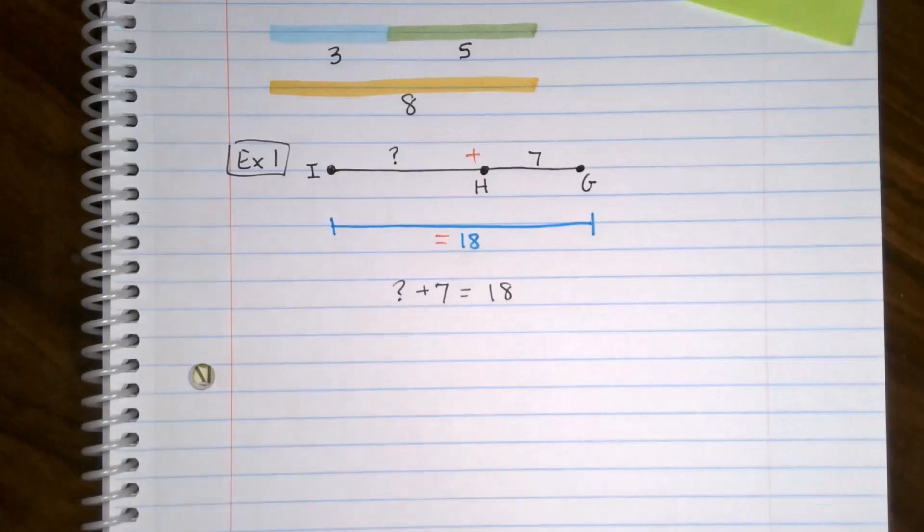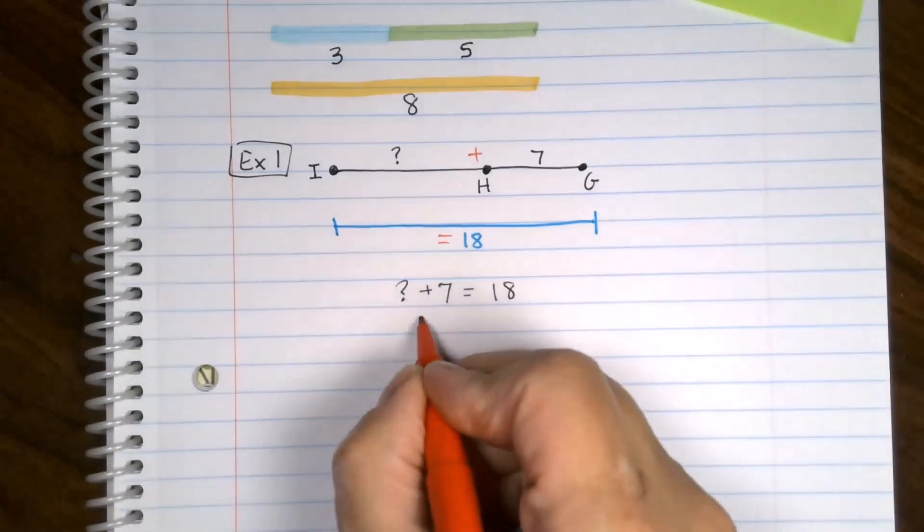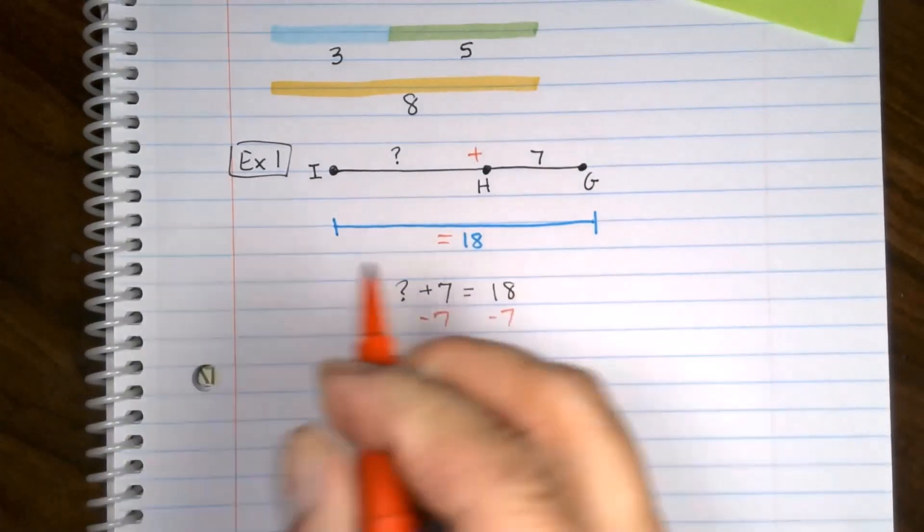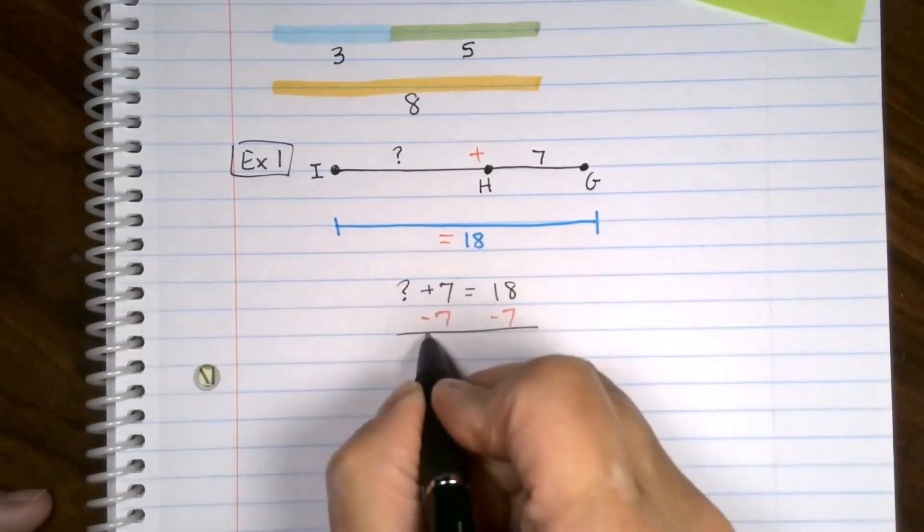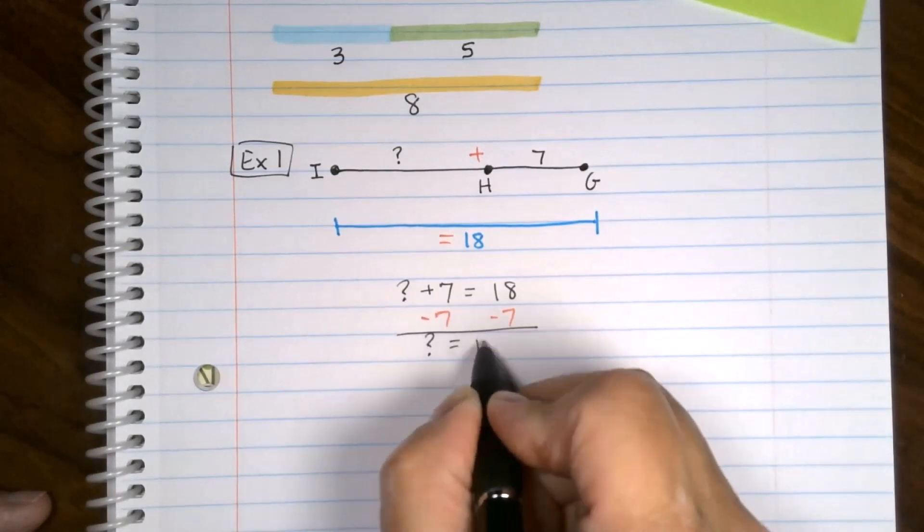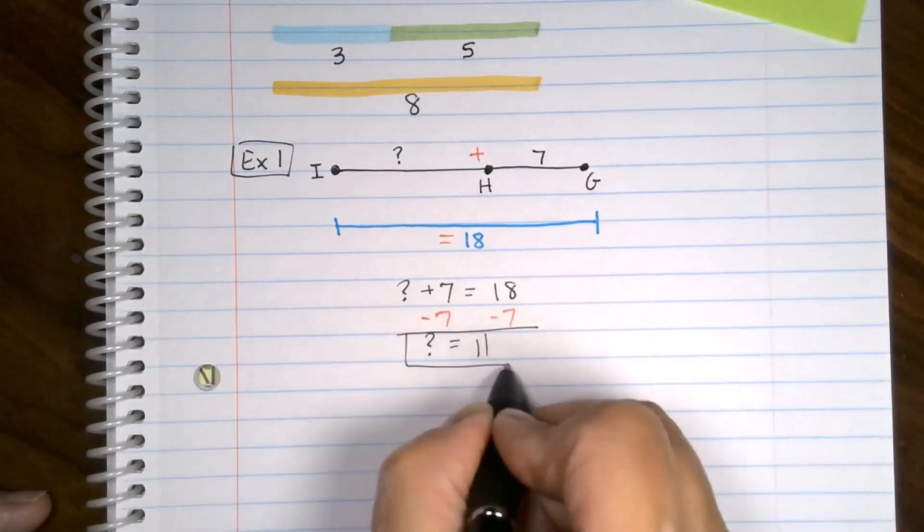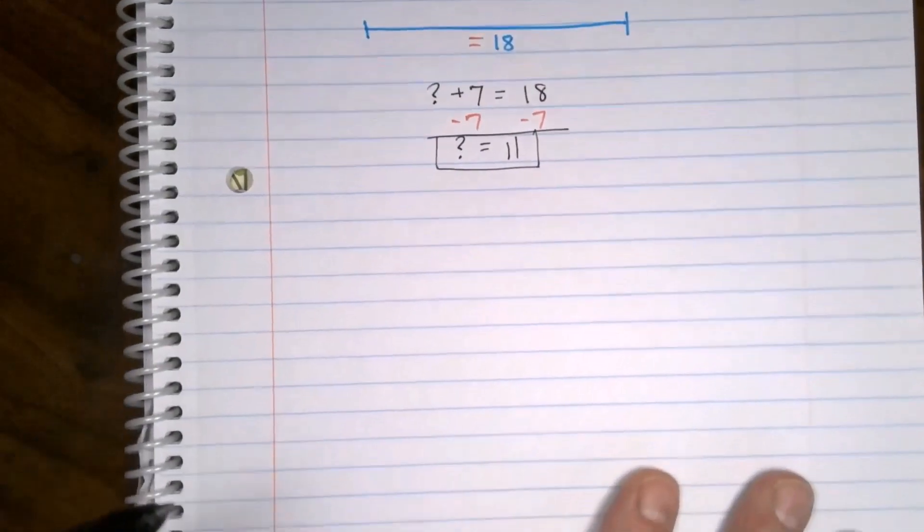Tiny little algebra equation here. I'm going to subtract seven from both sides. Question mark equals 11. And that is our final answer. Example number two.